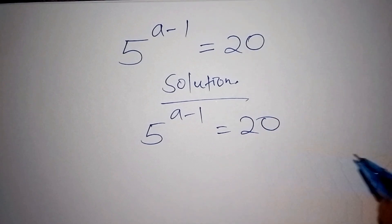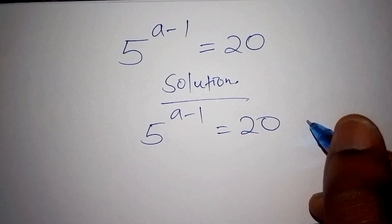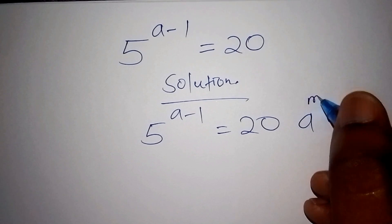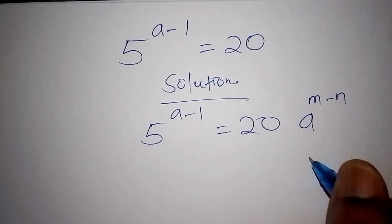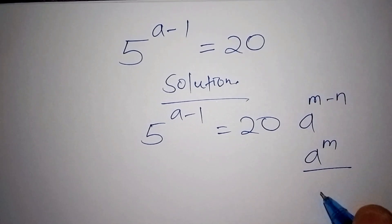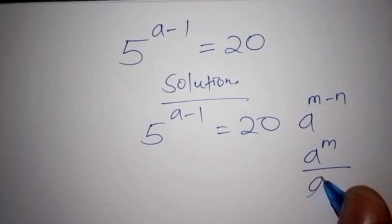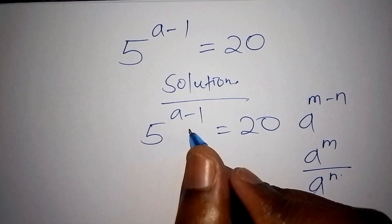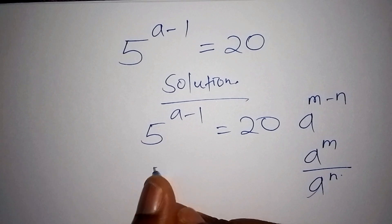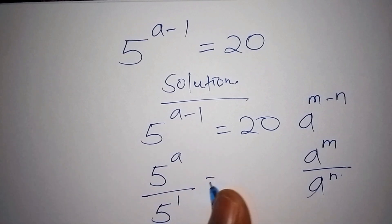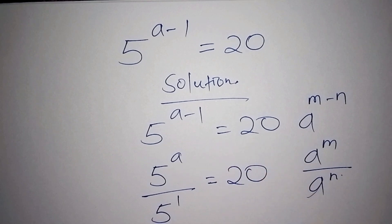The first thing we need to do is remember that if we have something like a to the power of m minus n, this can also be written as a to the power of m all over a to the power of n. So 5 to the power of a minus 1 can also be written as 5 to the power of a all over 5 to the power of 1, which equals 20.